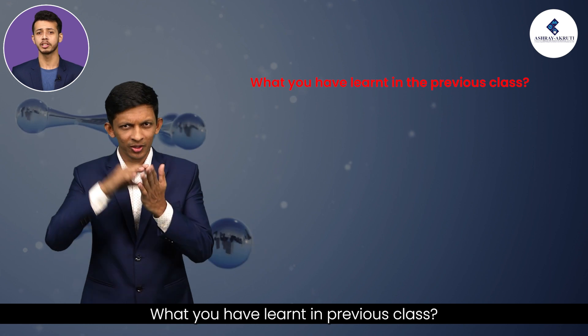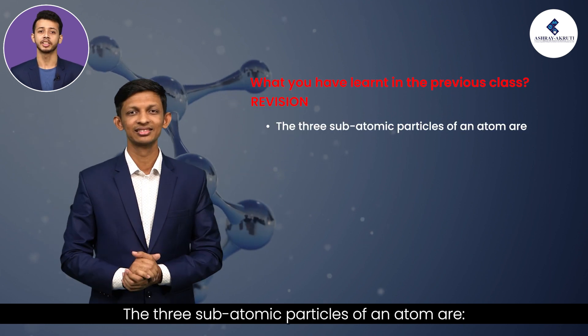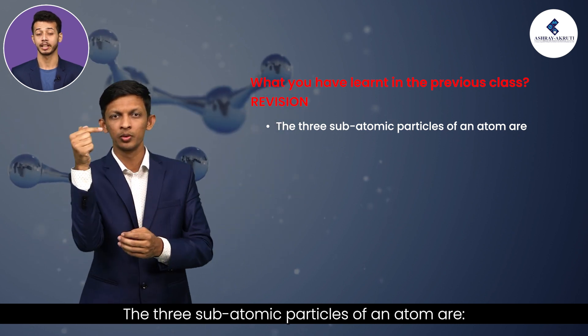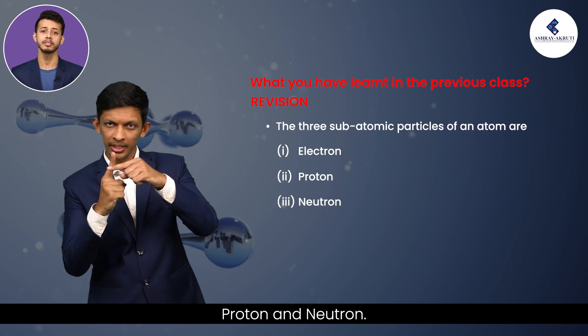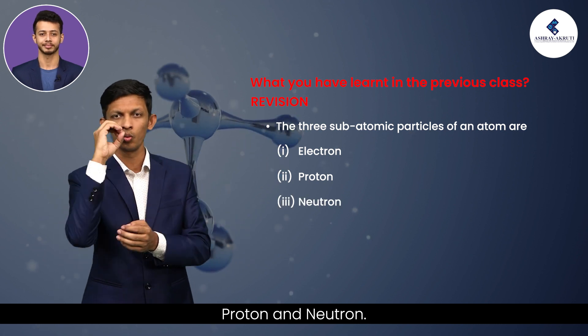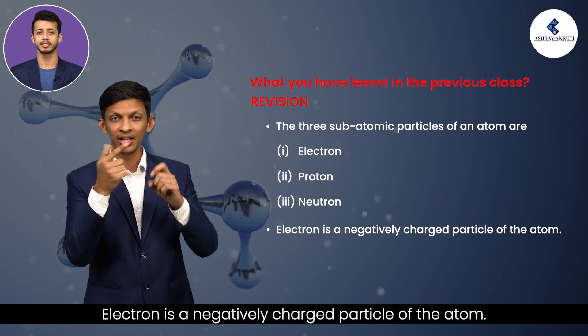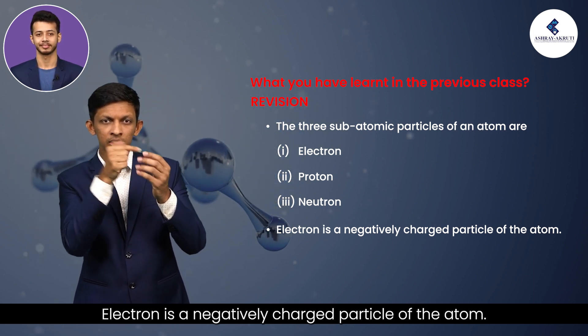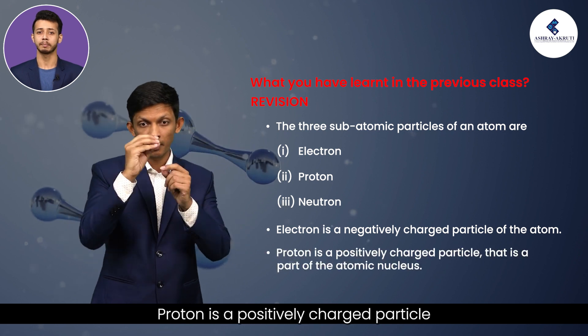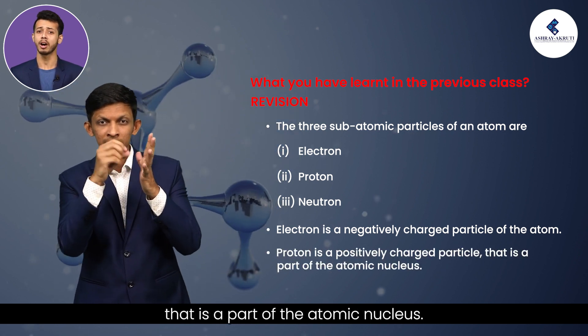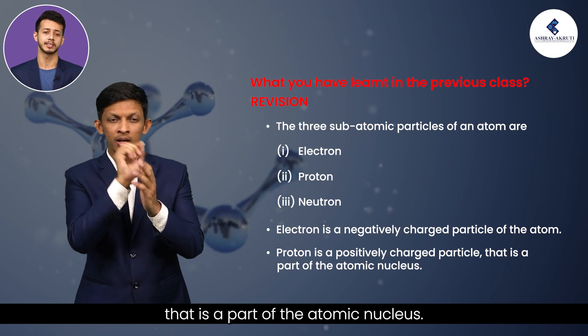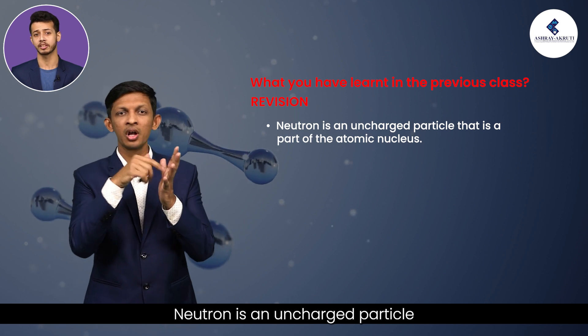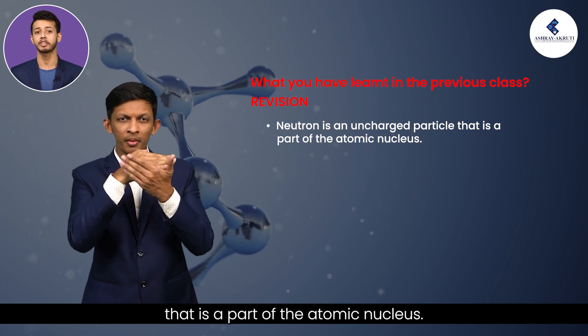What have you learnt in previous class? The three subatomic particles of an atom are electron, proton and neutron. Electron is a negatively charged particle of the atom. Proton is a positively charged particle that is a part of the atomic nucleus. Neutron is an uncharged particle that is a part of the atomic nucleus.